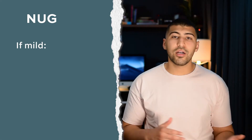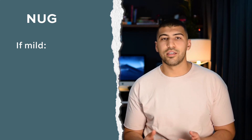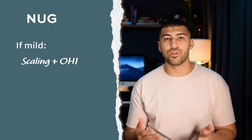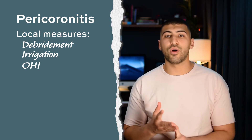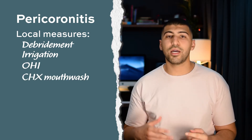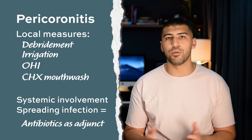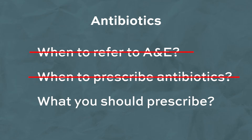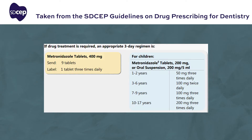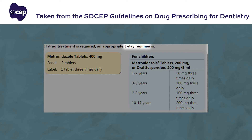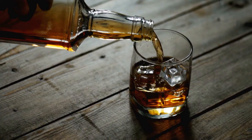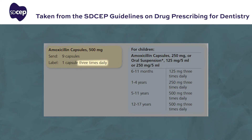When would you prescribe antibiotics? In mild cases of necrotizing ulcerative gingivitis, local measures like scaling or oral hygiene instructions might be enough, but in severe cases you would always prescribe antibiotics as adjunct treatment. For pericoronitis, always try to control it with local measures — debridement, irrigation, good oral hygiene, and chlorhexidine mouthwash — but prescribe antibiotics if there is systemic involvement or spreading infection. The first-line antibiotic for both conditions is metronidazole 400mg three times a day for three days, due to the gram-negative anaerobic nature of these infections. If the patient can't take metronidazole — because they take warfarin, are pregnant, or have an alcohol dependency — prescribe amoxicillin 500mg three times a day for three days.